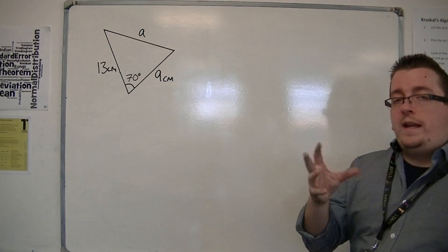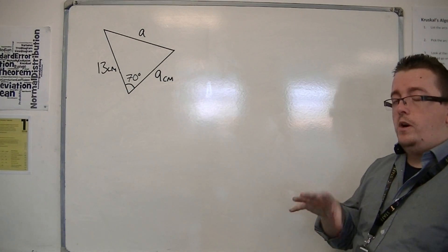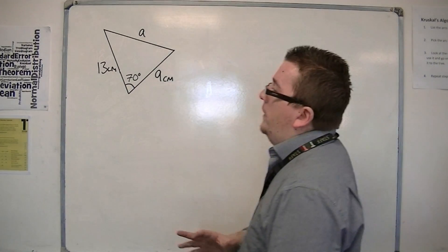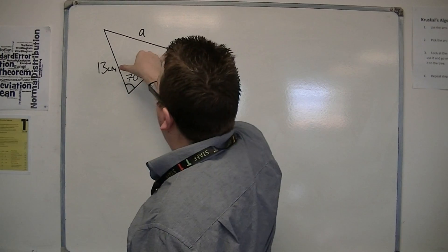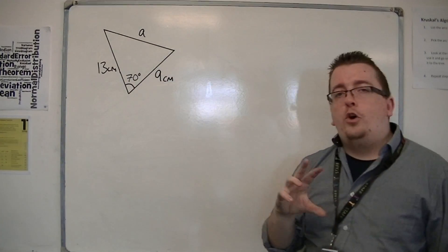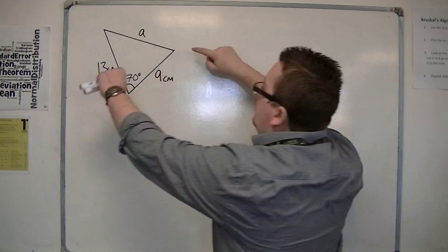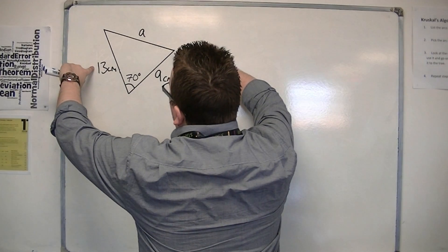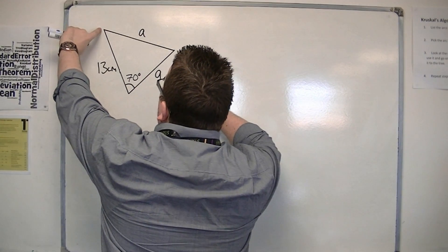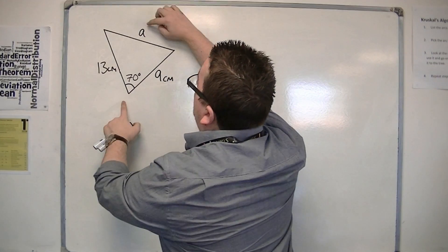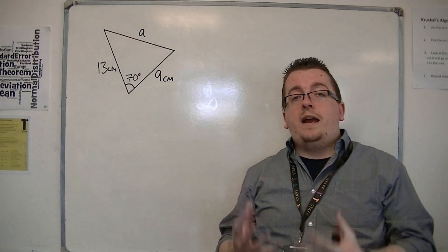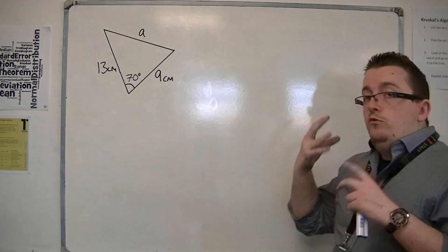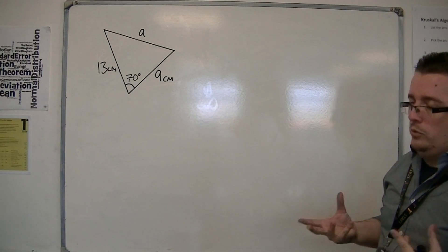Now the way that I know that I need to use the cosine rule rather than the sine rule is that at no point in this example do I have a complete pair of angle and opposite side. I don't know this angle, so I don't have this pair. I don't know this angle, so I don't know that pair. And I don't know this side, so I don't know that pair. And the sine rule needs you to have pairs. So if you don't, then the cosine rule is all you've got.